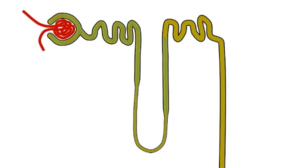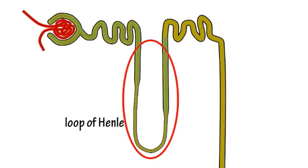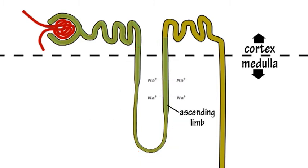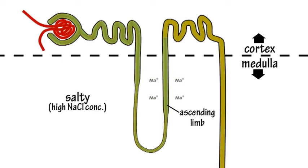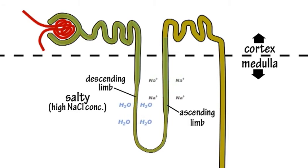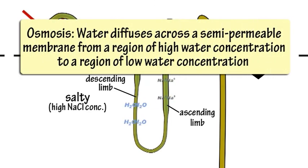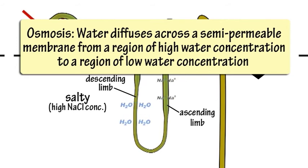The remaining ultrafiltrate enters the loop of Henle, where salts and water are removed. In the thick segment of the ascending limb of the loop of Henle, sodium ions are actively pumped into the medulla, making it very salty. This draws water out from the filtrate in the descending limb by osmosis, a process in which water diffuses across a semi-permeable membrane, from a region of high water concentration to a region of low water concentration.